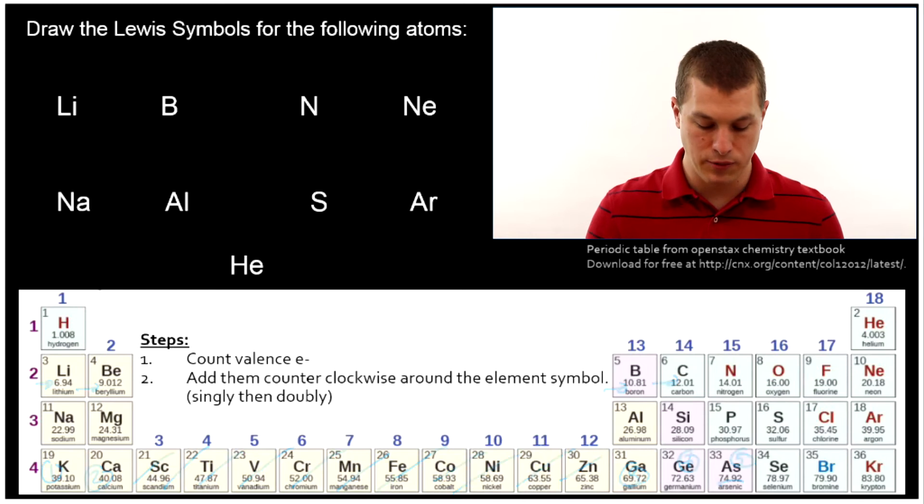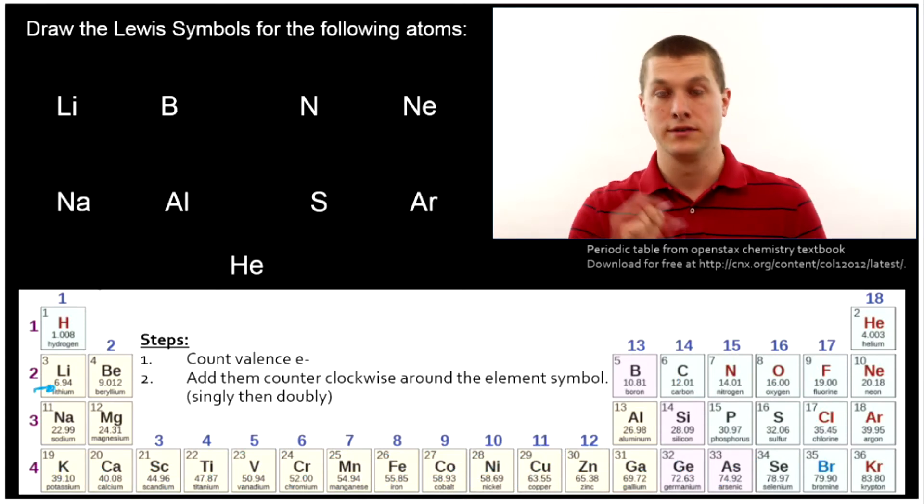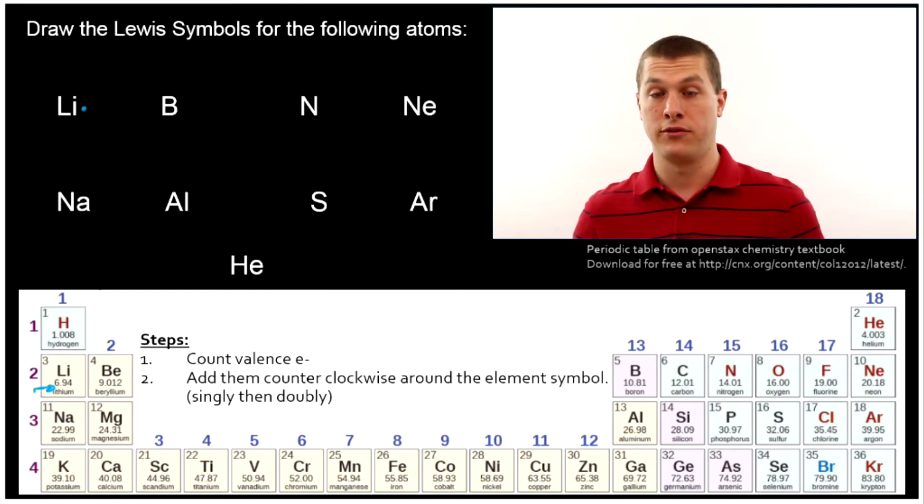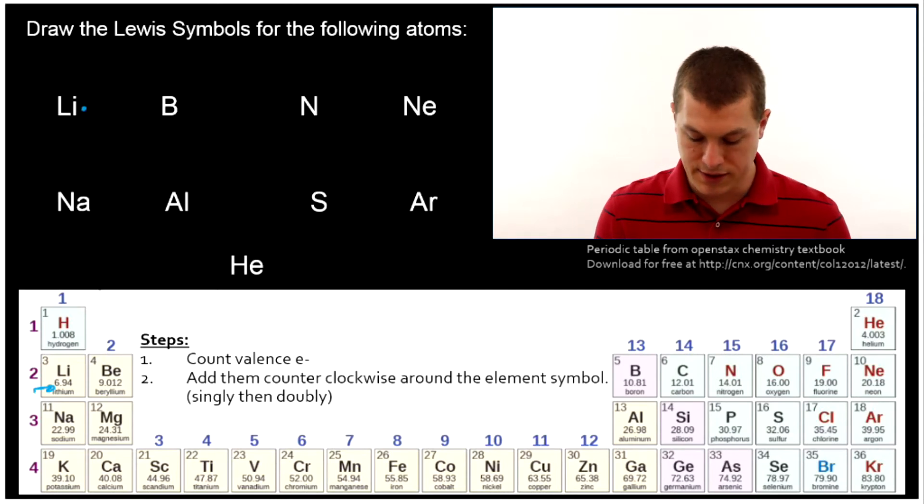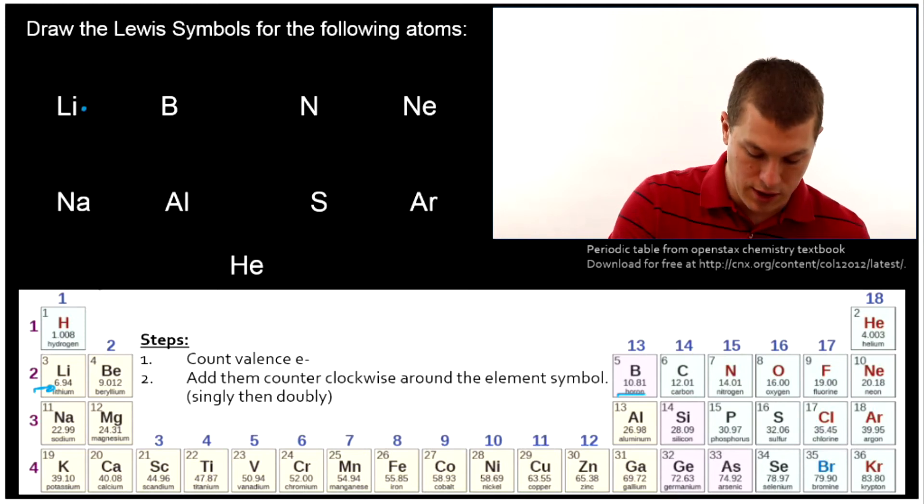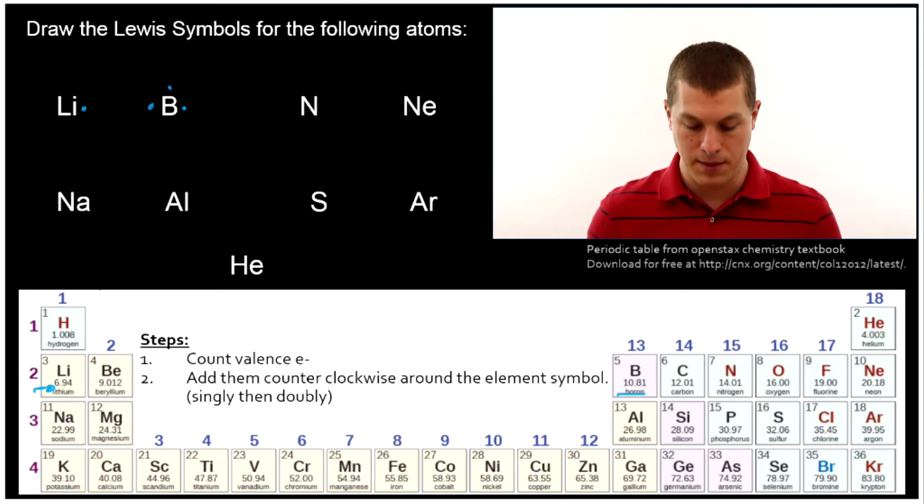All right let's go ahead and do lithium. We know lithium because it's the first box here has just one valence electron. We always start on the right hand side as if we were writing from left to right. We've just written the elemental symbol and now we'll write our first electron. Then we see boron is our next example and it's the third box over. We have lithium, beryllium, then boron. So that means it has three valence electrons. So we go one two three. Again starting on the right going counterclockwise around the atom.